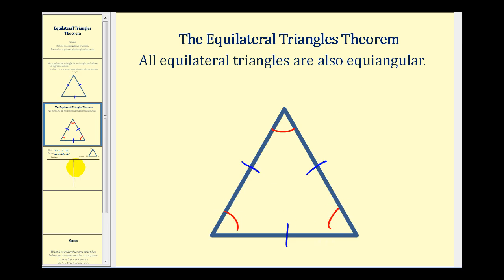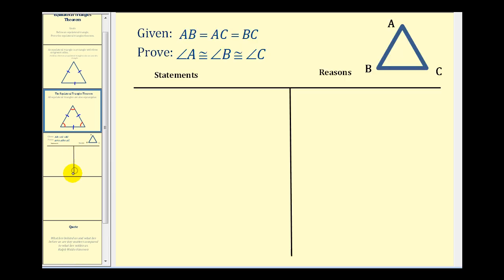Let's prove this theorem. Here we're given that AB is equal to AC which is equal to BC. We want to prove that angle A is congruent to angle B which is also congruent to angle C.